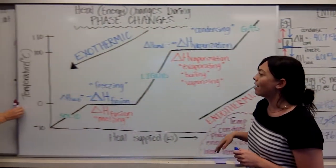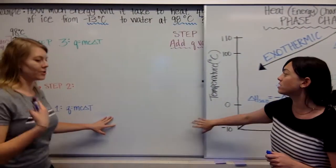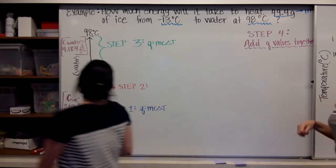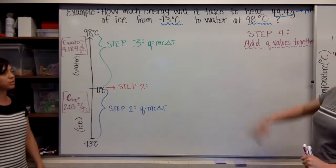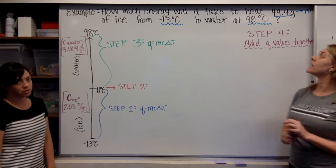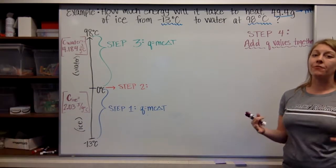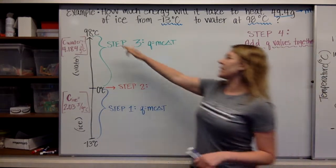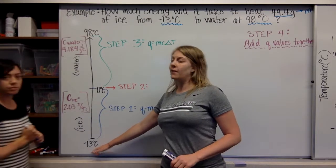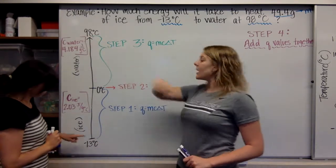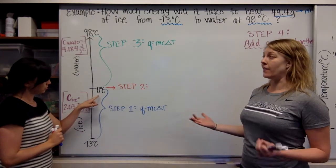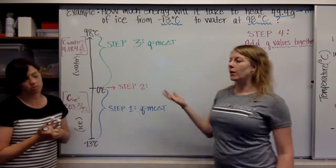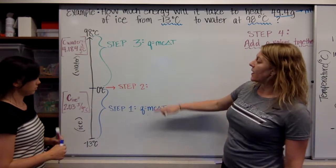Now we are going to do a sample problem practicing both Q equals mcΔT and our phase change calculation. The problem is: how much energy will it take to heat 49.4 grams of ice from negative 13 degrees Celsius to water at 98 degrees Celsius? We set up a temperature gauge going from negative 13 up to 98. In the middle at zero degrees Celsius we have a phase change, so this is going to be a multi-step problem.